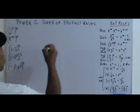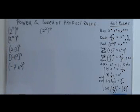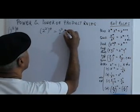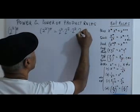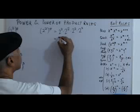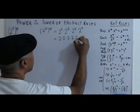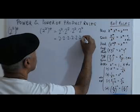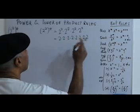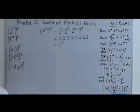Let's look at this first problem here. We have 2 squared raised to the 4th. What does that mean? By definition, that means 2 squared times 2 squared times 2 squared times 2 squared. But each of these is 2 times 2, another 2 times 2, another 2 times 2, another 2 times 2 — that's 1, 2, 3, 4, 5, 6, 7, 8. So by definition, this is 2 to the 8th.